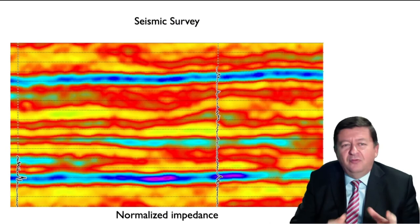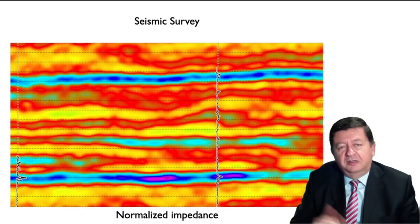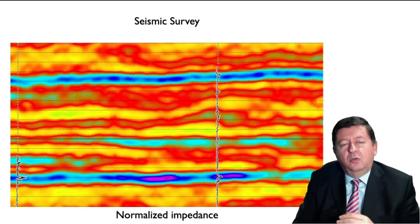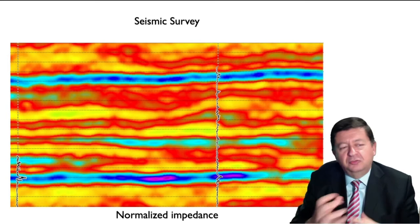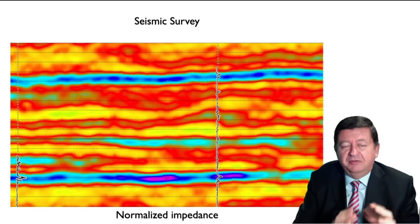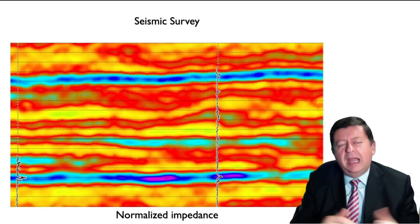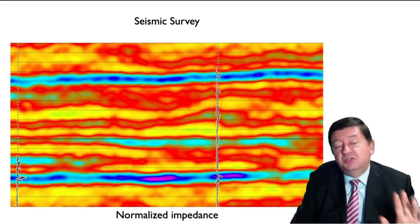Besides a couple of wells, we may have some seismic information, some geophysical information like a seismic survey. I'm showing you what could be the result of this seismic survey — what you see here is a normalized impedance. You can relate this impedance with some of the parameters that describe the aquifer; it's more related to the porosity or to the water content. So we have very limited direct information through the wells, and some approximate information about the heterogeneity through secondary geophysical information when we have access to it.